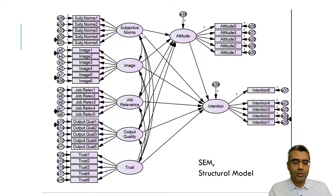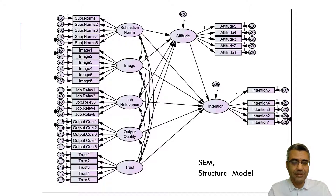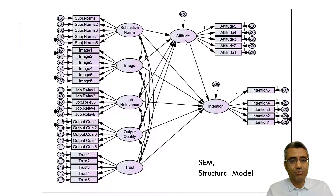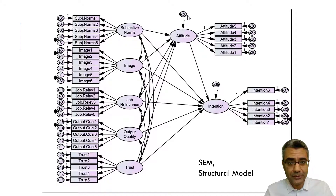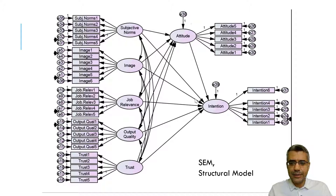This is the structural model, and you can see the paths are now present. In this stage we test the hypotheses and report the findings. When you draw a structural model, make sure all exogenous variables are co-variated — you can see these covariances here. Any endogenous variable — any variable where a single-headed arrow points to it — needs an error term. This is why we have two error terms here, and this is something you need to make sure you have addressed.